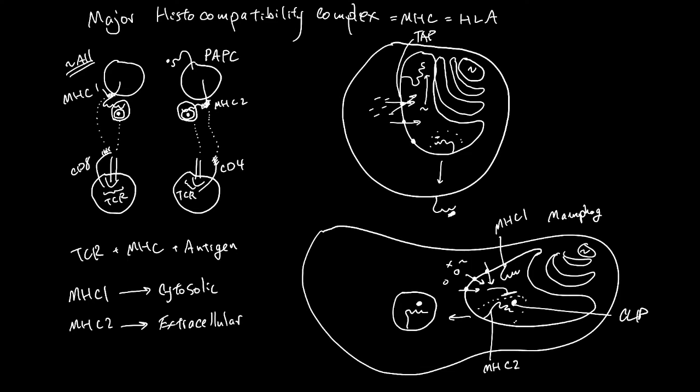But when this macrophage eats extracellular things and takes them inside the endosome, this endosome will fuse with this vesicle containing the MHC-2.